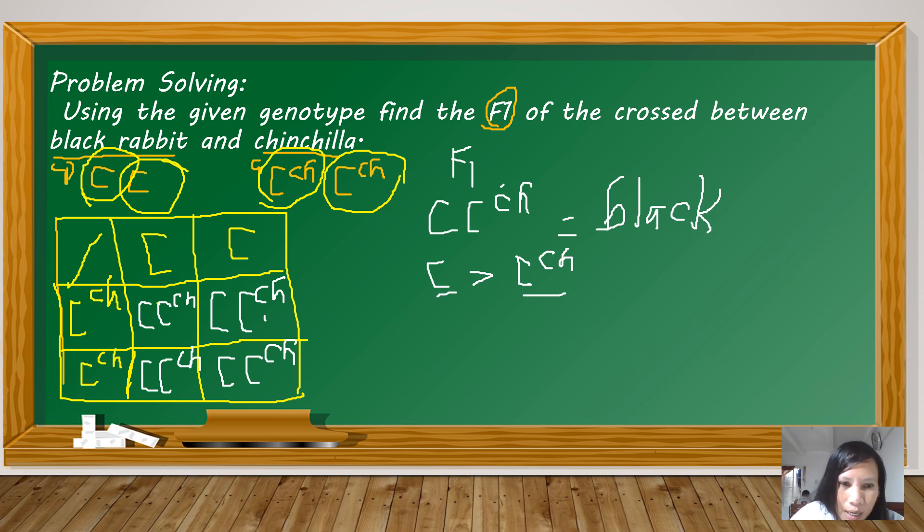Which is equivalent to 100%. So, the cross between a black rabbit and Chinchilla produces 100% black in the first filial generation. Again, why black? Because C is dominant over C-h.